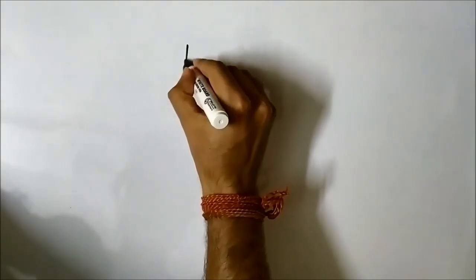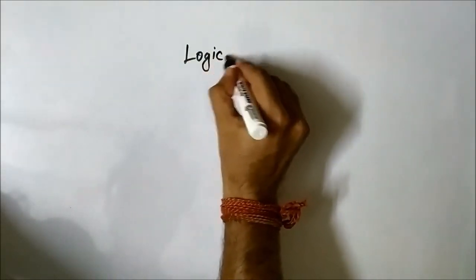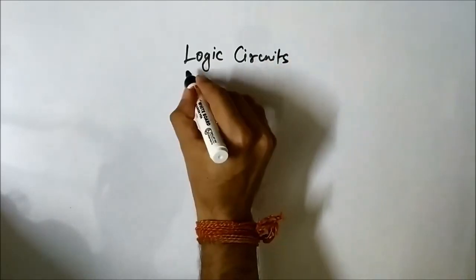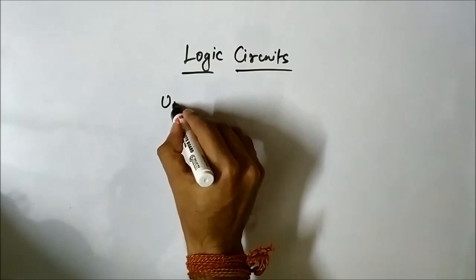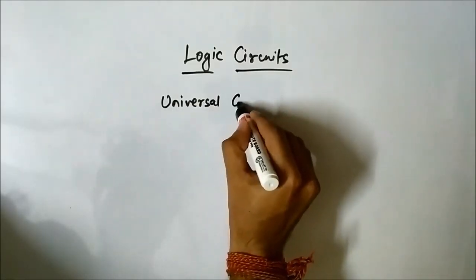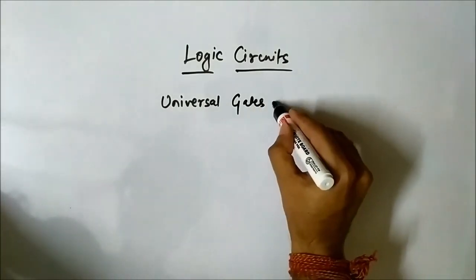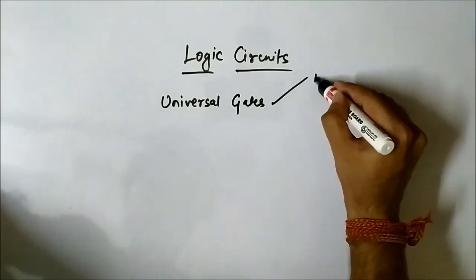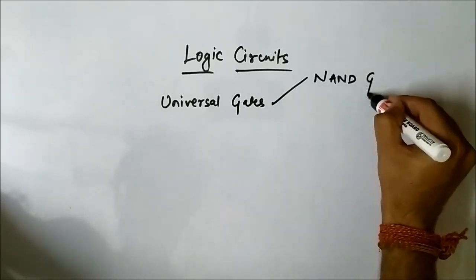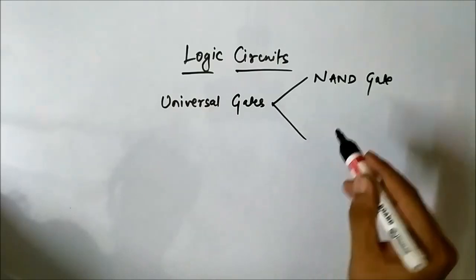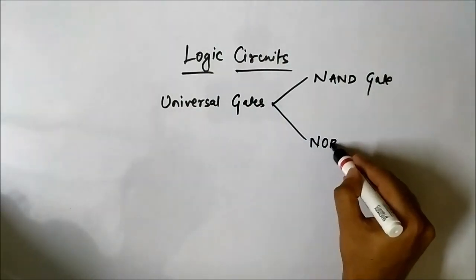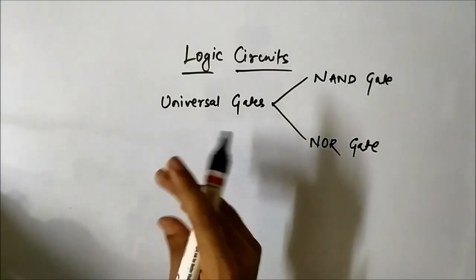In the next series of videos, we will be doing the same — we will implement Boolean expressions — but here we will be using universal gates. We will draw logic circuits using universal gates. When I say universal gates, it means we have two options: NAND gate and NOR gate. We have already discussed the basic concepts and truth tables of NAND and NOR.